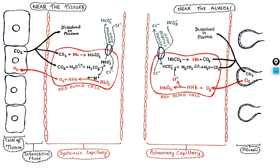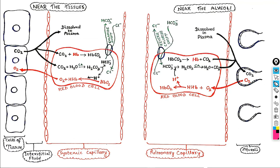The direct answer to why chloride shift occurs: it occurs to maintain the balance of charge. Bicarbonate ion is produced by the dissociation of carbonic acid, which produces two ions — bicarbonate ion and hydrogen ion. This bicarbonate ion goes out of the RBC, so to maintain charge, another negative ion — the chloride ion — is brought inside the RBC. This phenomenon is called chloride shift.